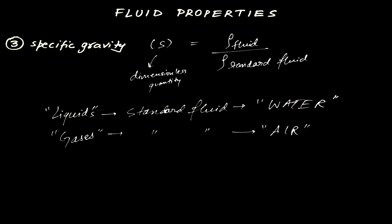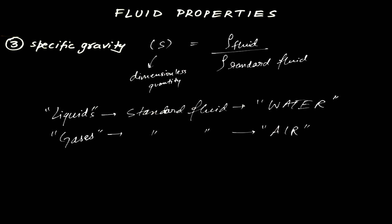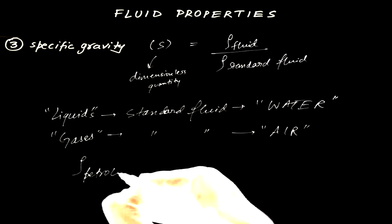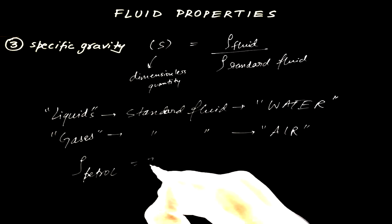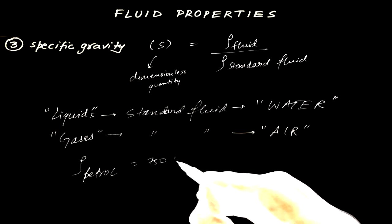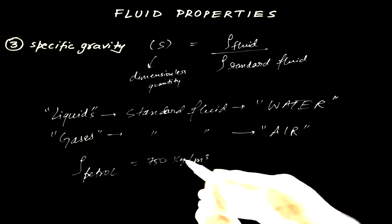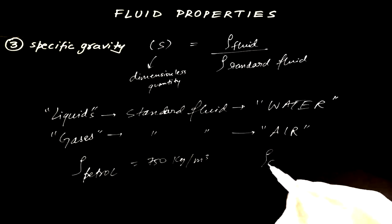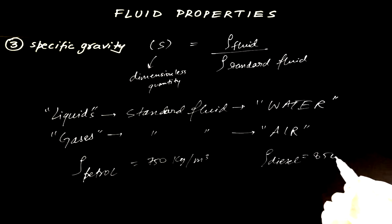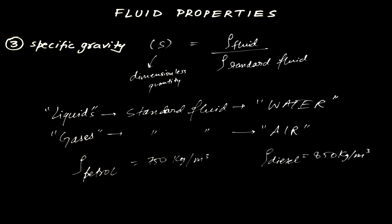Now, if you want to know some values — for petrol, the density is around 750 kg/m³, and the density of diesel is around 850 kg/m³.